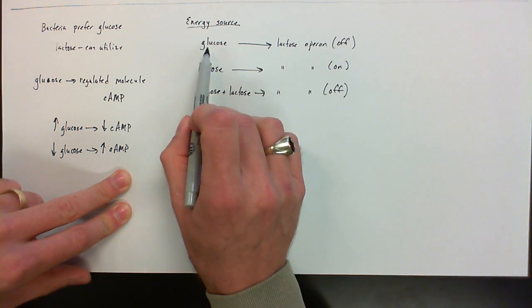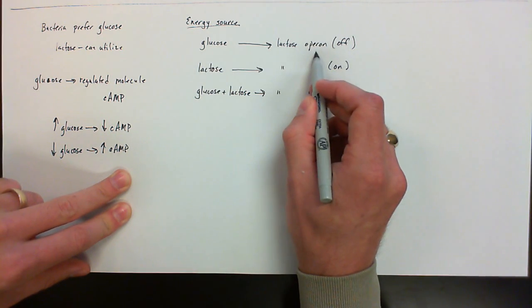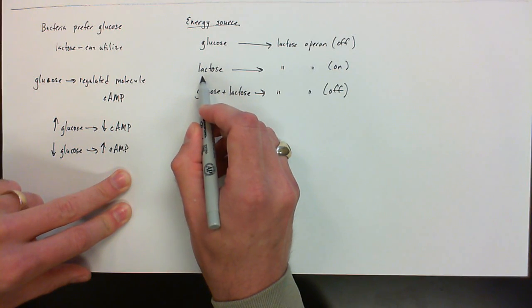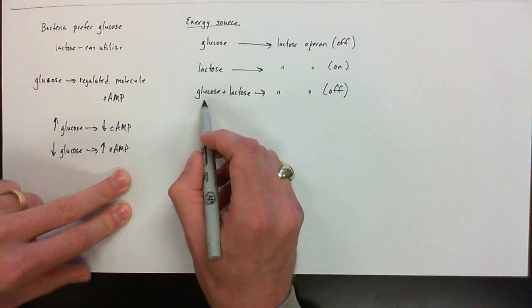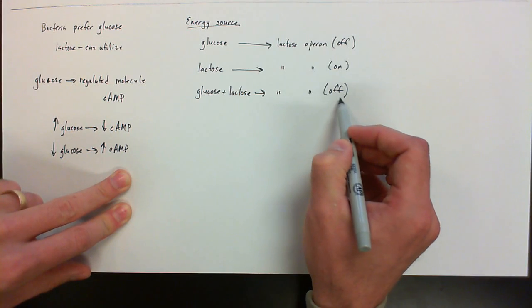So once again in review, if the only energy source available for the bacteria is glucose, the lactose operon needs to be turned off. When lactose is the only source of energy, the lactose operon needs to be turned on. And in glucose plus lactose, the lactose operon is going to be turned off.